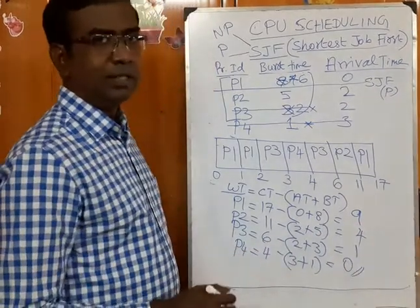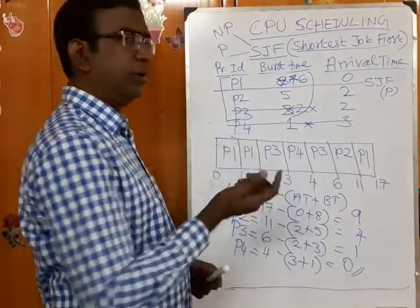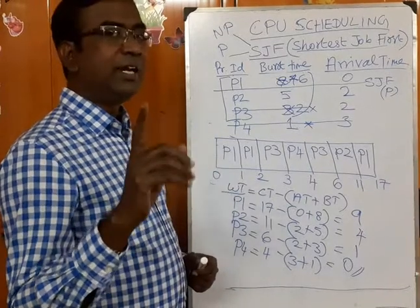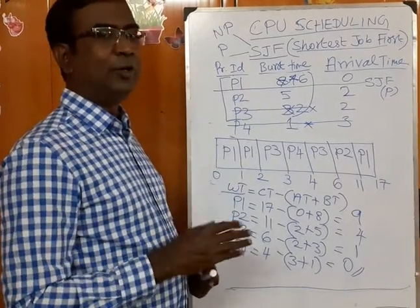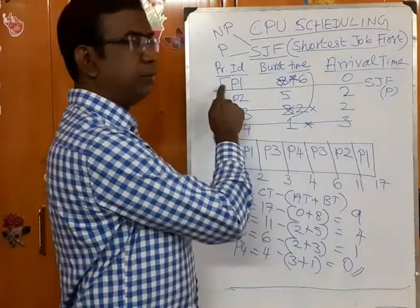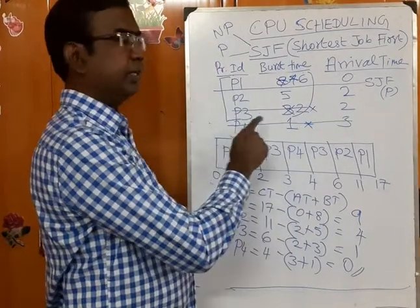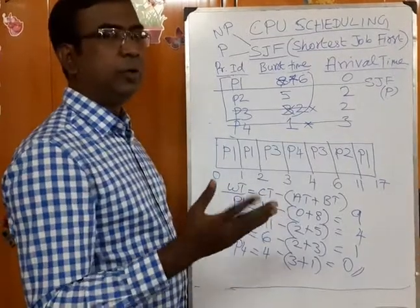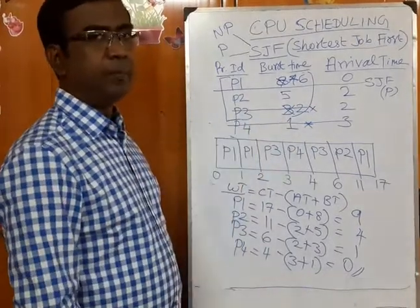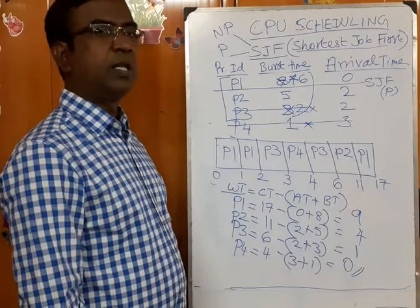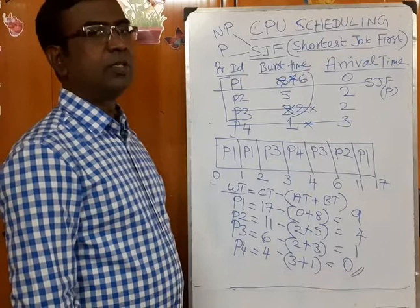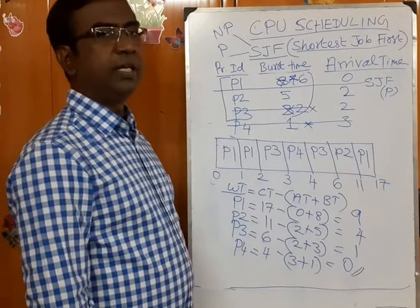Even though P4 came into the queue as the last process, its waiting time is 0. At time 0 only P1 was there; after 2 seconds P1, P2, P3 were there; P4 arrived only at the 3rd second. Even so, P4's waiting time becomes 0 because P4 is the smallest job — it has the smallest CPU burst time — so it is given priority in Shortest Job First scheduling.